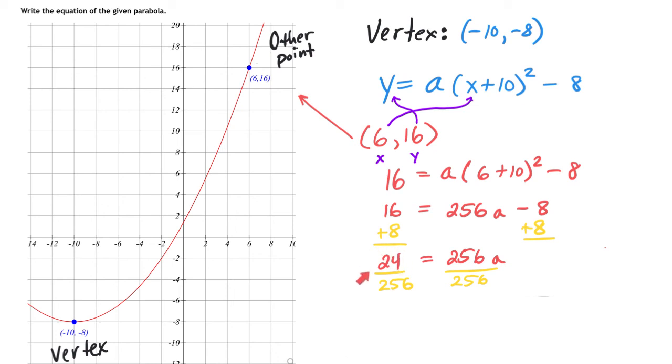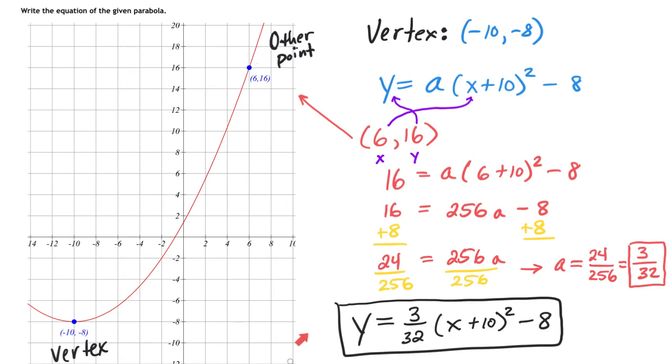And then at the end, this 24 over 256 turns into the reduced fraction of 3 over 32. And then you'll take your 3 over 32 and put it in for a, and then you can write your equation.